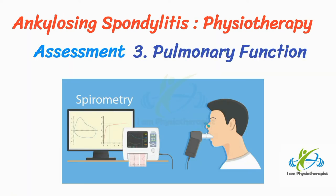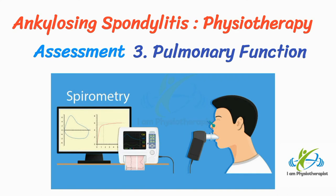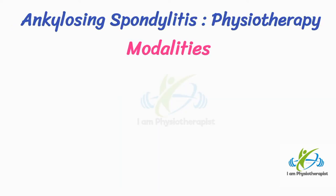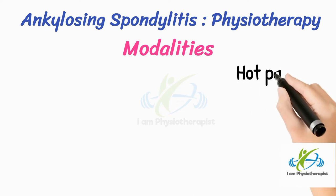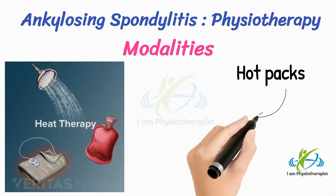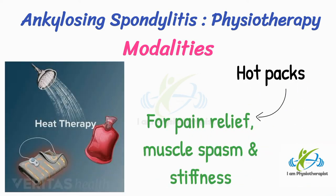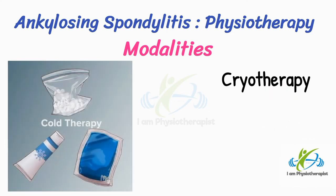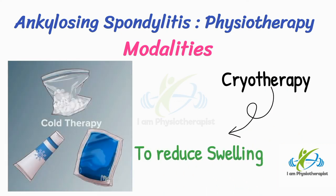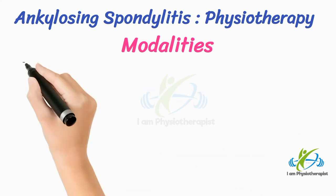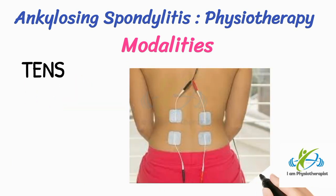Assessment of pulmonary function: A spirometer can be used to assess lung function, and chest expansion is measured using a tape. Physiotherapy treatment modalities include cold packs for pain relief, muscle spasm, and stiffness; cold baths and warm showers for relaxation; cryotherapy for swelling management; and transcutaneous electrical nerve stimulation (TENS) for pain relief.